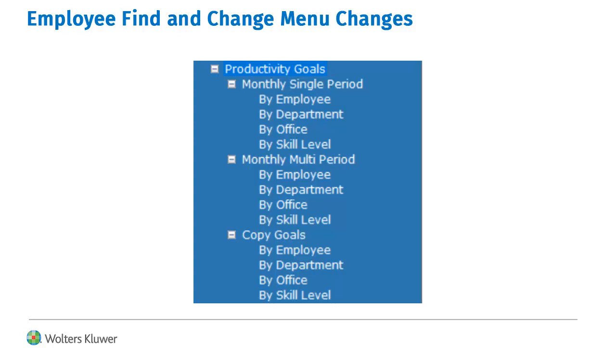Monthly Budget Hours is replaced with Monthly Multi-Period if editing multiple periods. Copy Budget Hours is replaced with Copy Goals.